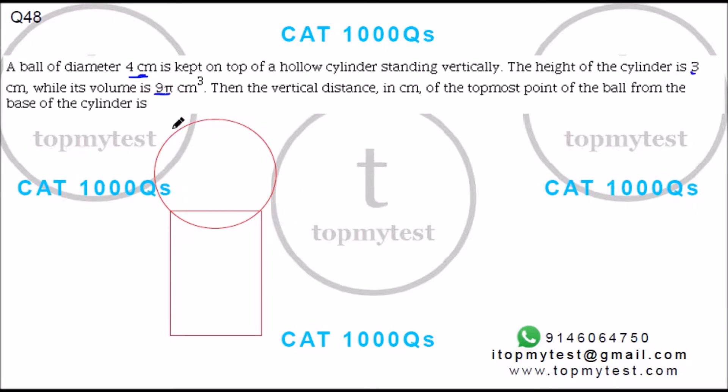So this is how it roughly will look like in the cross section. You have a ball here. Diameter here is 4. It is kept on top of a vertical cylinder. Volume of this is 9π. Height is 3.